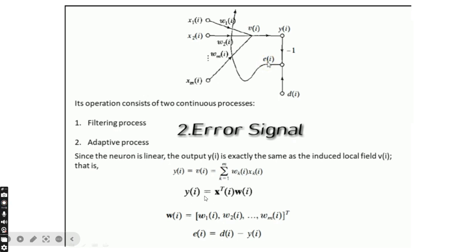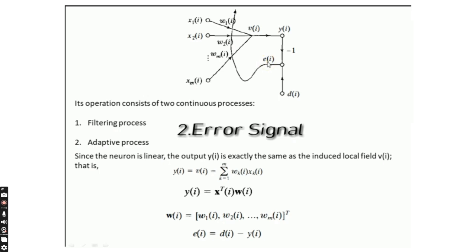In short form, YI equals x transpose of i times wi. Here xi equals [x1, x2, ..., xm] and wi equals [w1(i), w2(i), ..., wm(i)] transpose. The error signal EI equals the desired output di minus the current output yi. This is the filtering process: we get one output and the error signal, where the error signal is the difference between the desired output and the current output.